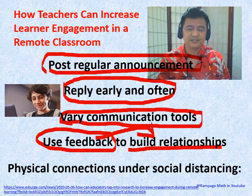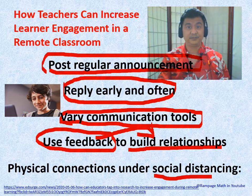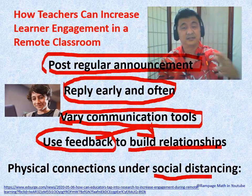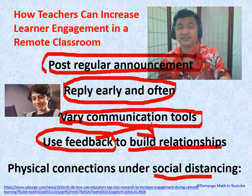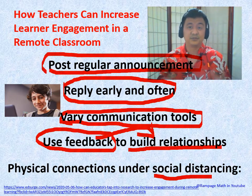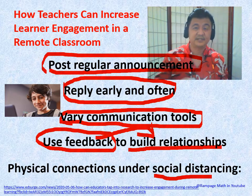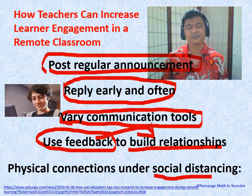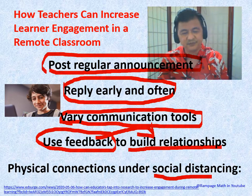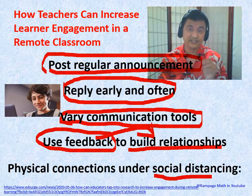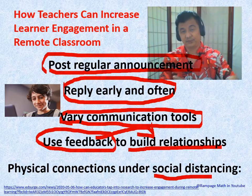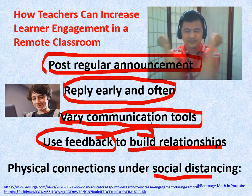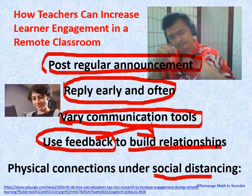Number five: physical connection under social distancing. Depending on the community phase, teachers can drive by students' homes and wave; if that's not possible, pass by the market or neighborhood on a tricycle, wave, put up birthday posters for students. Be very creative in showing physical connection — wearing a mask, maintaining social distance, just a wave, a fist bump, or an elbow bump.